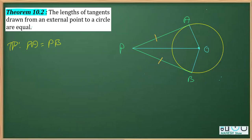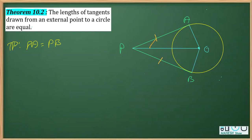To prove this, we consider two triangles and show they are congruent. First, OA equals OB because they are radii. Second, PO equals OP, which is the common side. Third, the radius is perpendicular to the tangent at the point of contact, so angle OAP equals 90 degrees and angle OBP equals 90 degrees. From the RHS criterion, we can say the triangles are congruent.